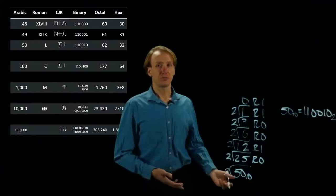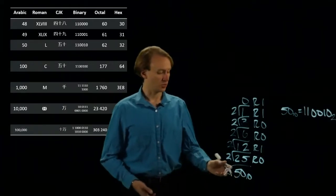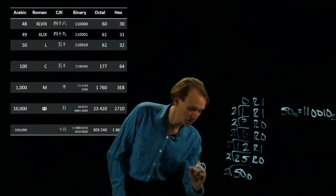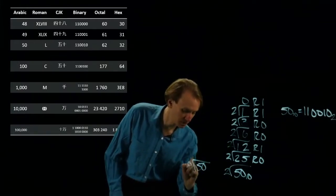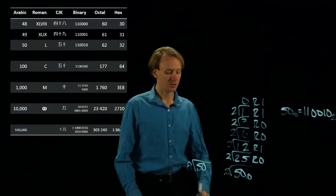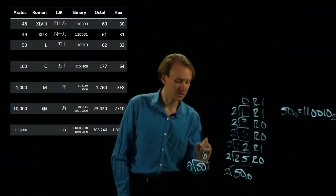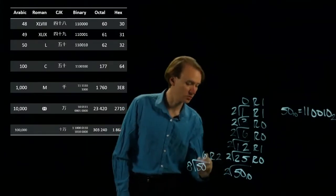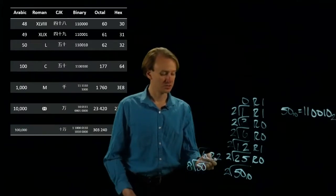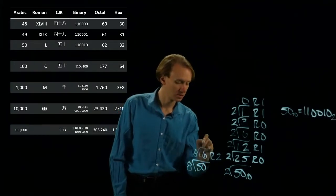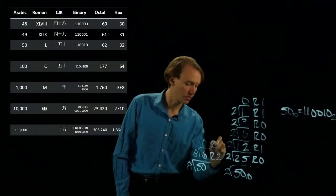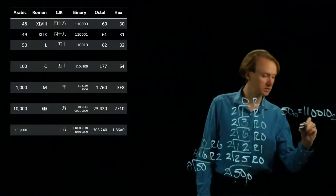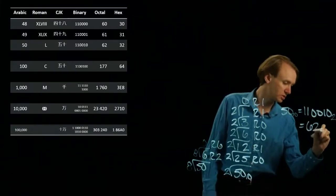Now we can do the same thing for octal, except we'll be dividing by 8 instead. So 50 divided by 8 will give me 6. 6 times 8 is 48, and that will leave a remainder of 2. 6 divided by 8 is 0 remainder 6. So 50 is 62 in octal.